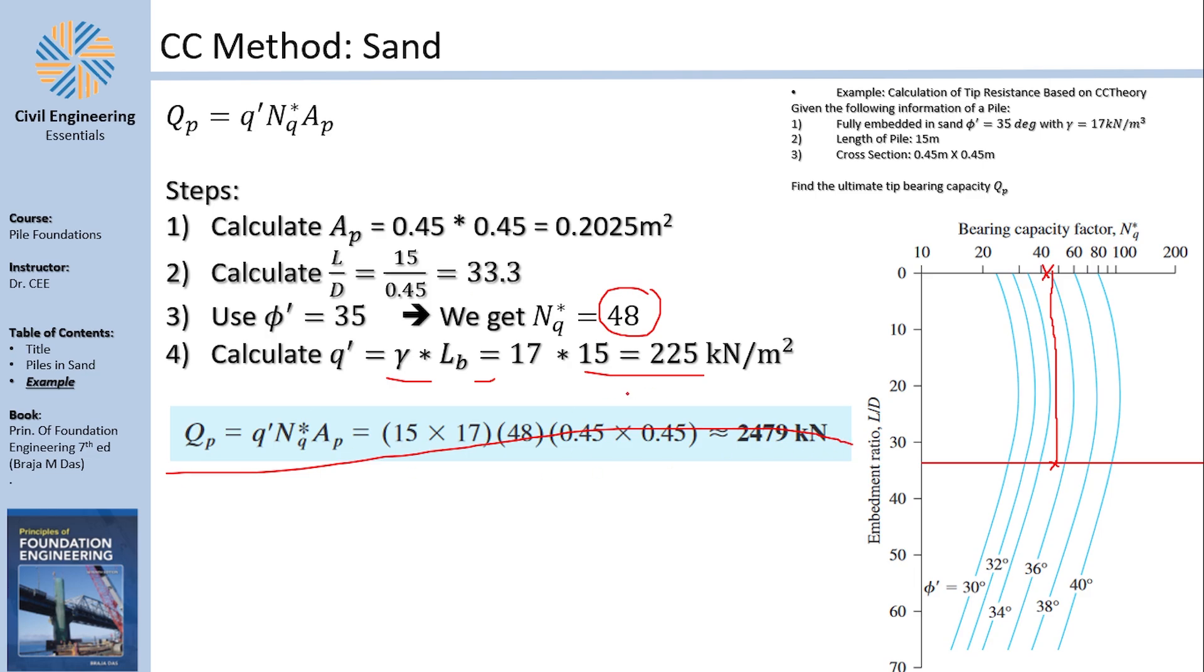Now, of course, here one question must arise immediately. We have Meyerhof's method, we have Vesic's method, we have Coyle and Castello's method, we have methods from Braud and so on. I'm talking about the SPT test. Which method should we use? You would have to use a consistent method for the tip and skin friction resistance. For example, you use Meyerhof's method in calculating QP and QS, you use Coyle and Castello's method in finding QP and QS, you use Vesic's method in finding QP and QS.